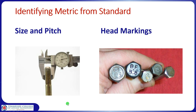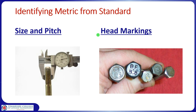When we're identifying nuts and bolts, we usually have to identify whether they're metric or standard. One way is with size and pitch — we measure the diameter of the bolt and look at the thread pitch, which gives us clues. There's also another way: we can look at the head markings, though it's not always foolproof.